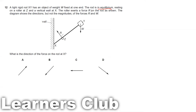The diagram shows the direction but not the magnitude of the forces R and W — it is not drawn to scale, so you cannot rely on the diagram's magnitude. The question asks for the direction of the force on the rod at X, given the forces acting at Y and Z.